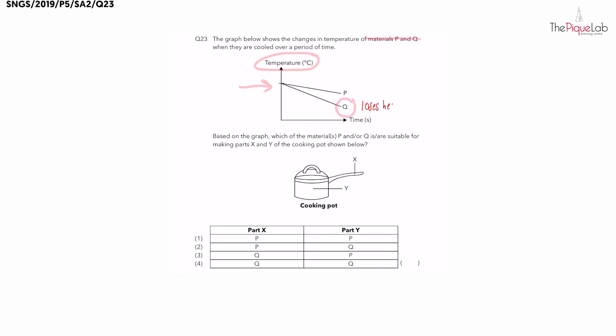Let's write it down. Since Q loses heat faster than P, this makes Q a better conductor of heat. I've used the symbol C for conductor. Now what does that tell us about material P? So P is the poorer conductor of heat.